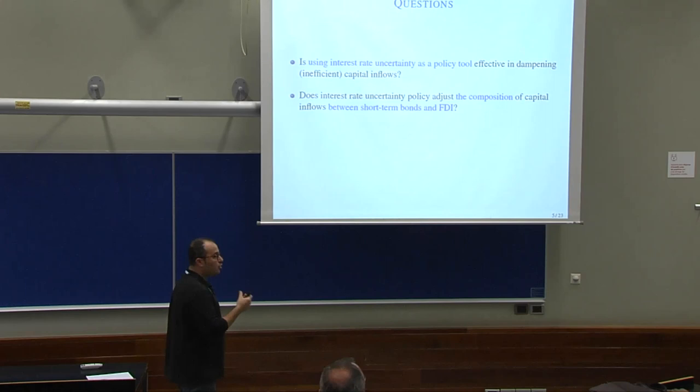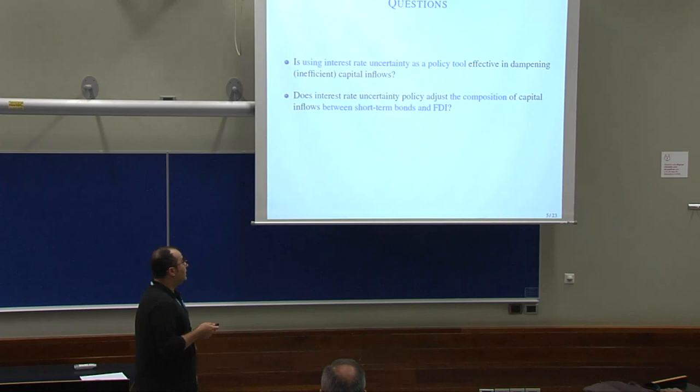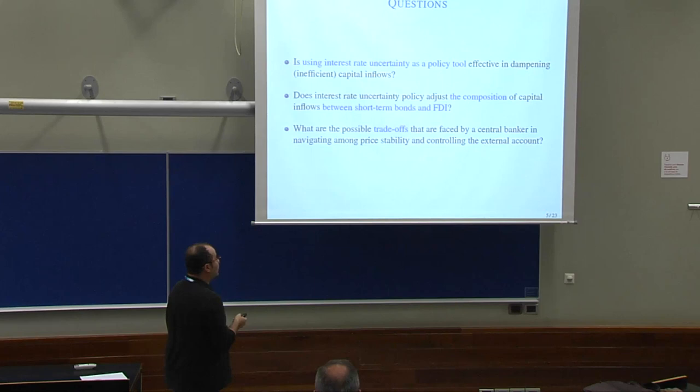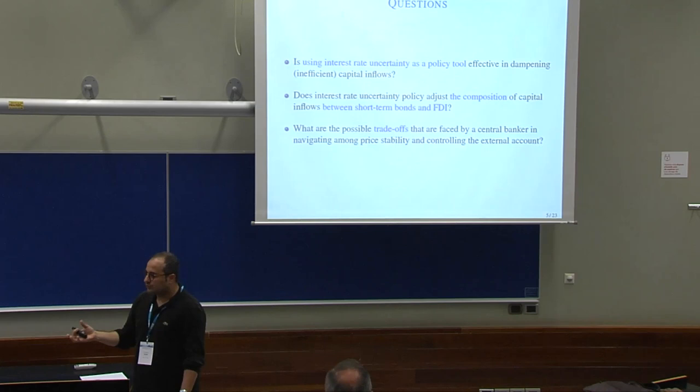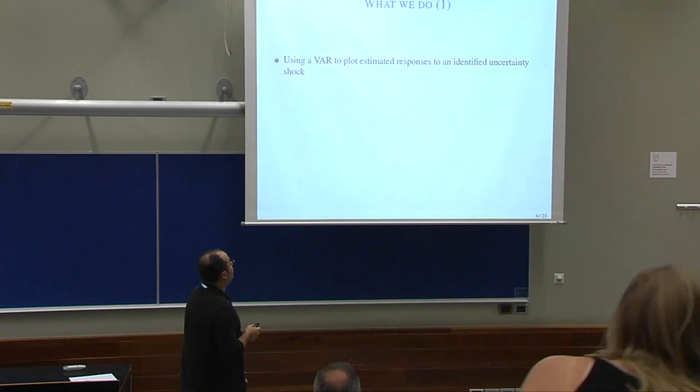Against this background, we ask: is using interest rate uncertainty as a policy tool effective in dampening capital inflows? And if yes, what is the effect on the composition of capital inflows between short-term ones like portfolio inflows and long-term ones like FDI? Providing a framework to answer these two questions leads to a third question: what are the trade-offs faced by a central banker navigating between price stability and controlling the external account? You can mess up your main inflation targeting objectives while trying to control current account imbalances.